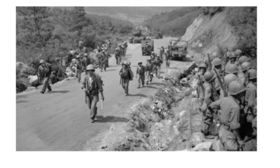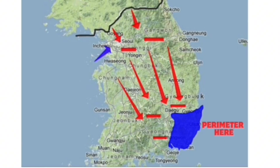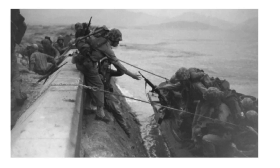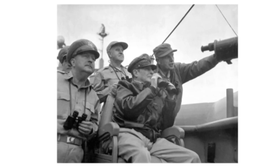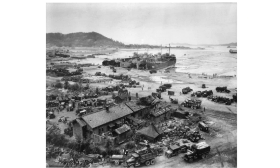The UN troops were in South Korea but were quickly pushed back by North Korean forces, which made them form a perimeter around Pusan. On September 15th, the 1st Marine Division launched an amphibious assault at Incheon. The North Korean troops were pushed back over the 38th parallel. This was a crucial turning point for the conflict.